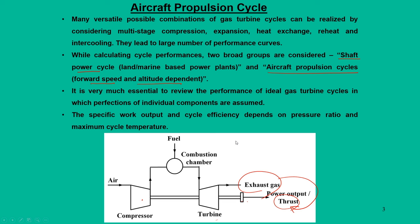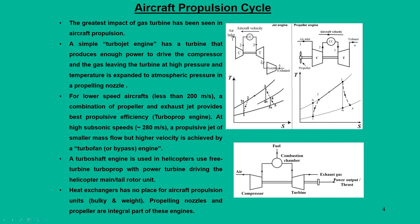However, in the shaft power cycles we have seen many kinds of modifications like multistage compression, expansion, heat exchange, reheat, and intercooling — these are improvements in power production and efficiency. Our main attention in this lecture is how gas turbine cycles are used as a propulsion device. The Brayton cycle was modified in two forms: one is called the jet engine concept, and the other is the propeller engine concept.